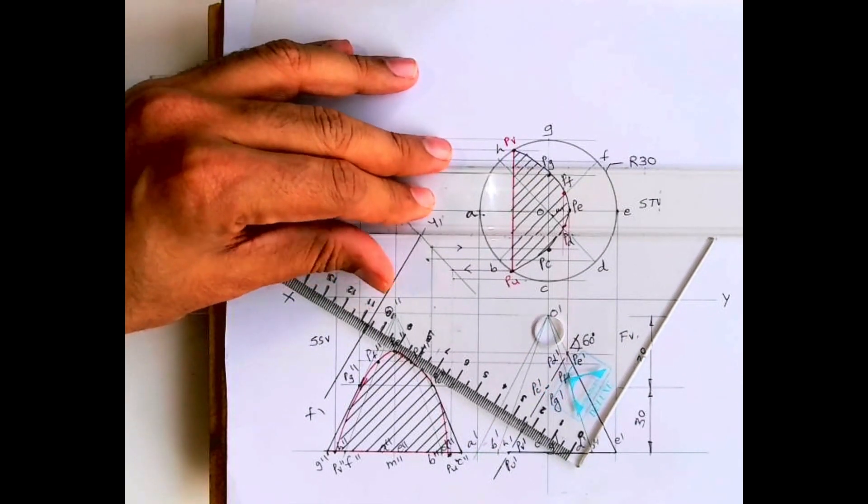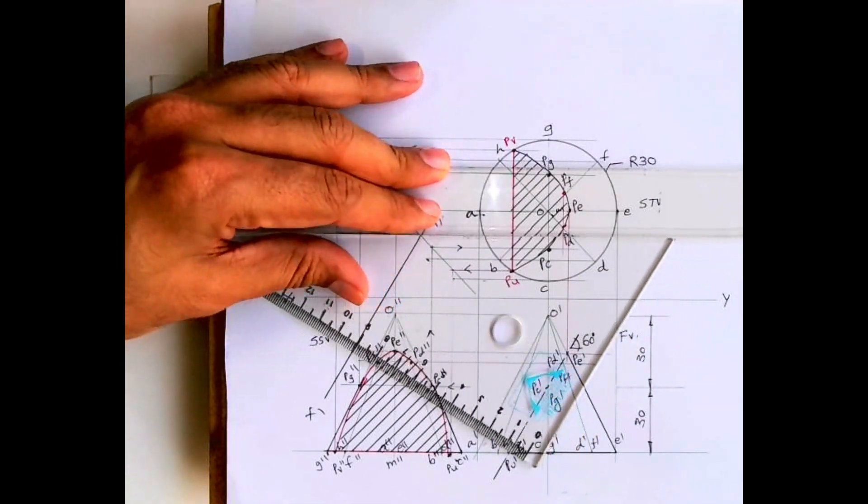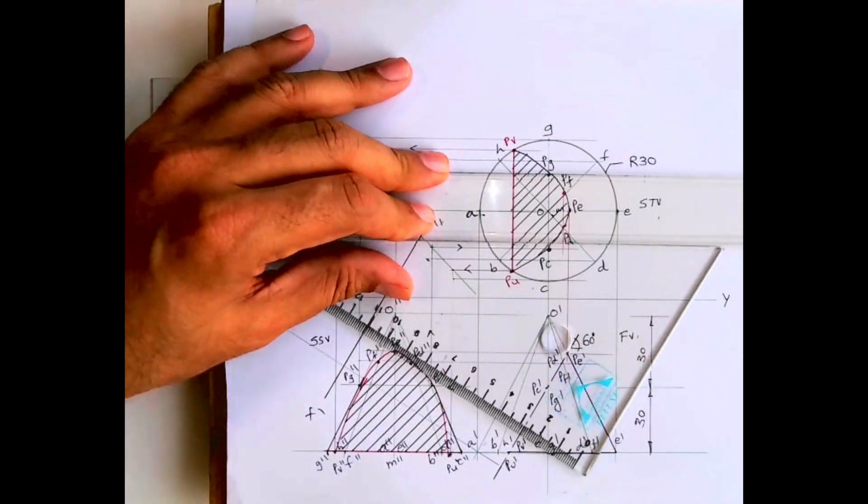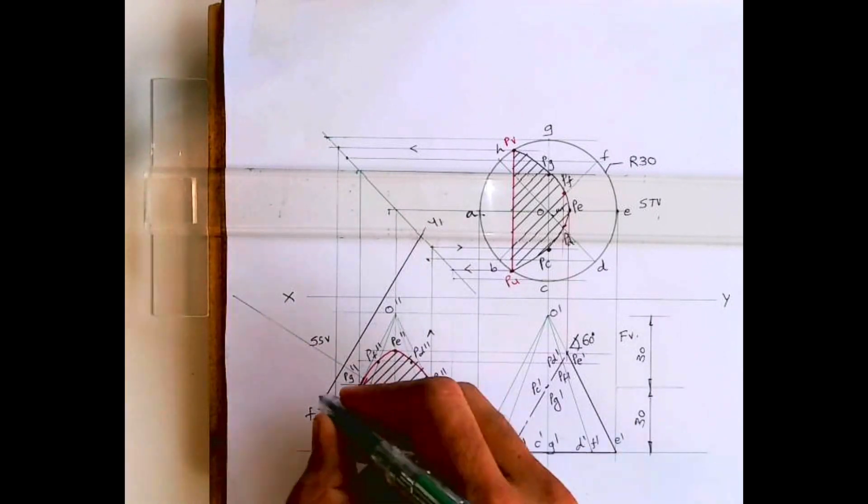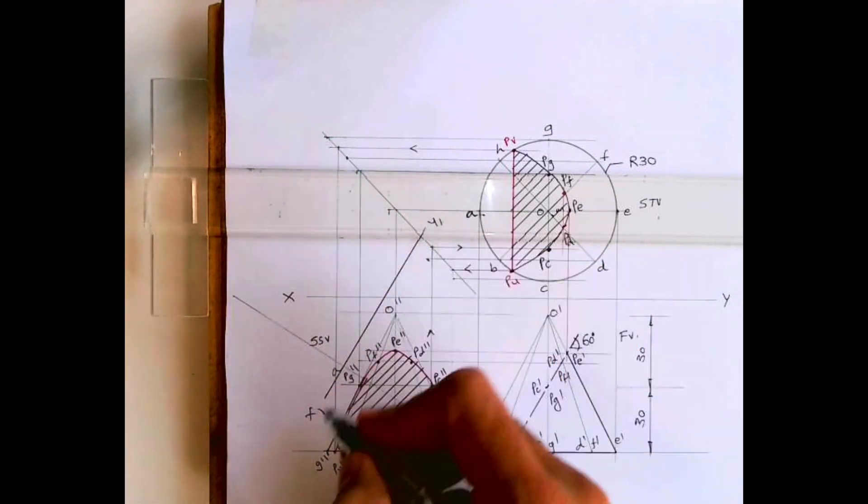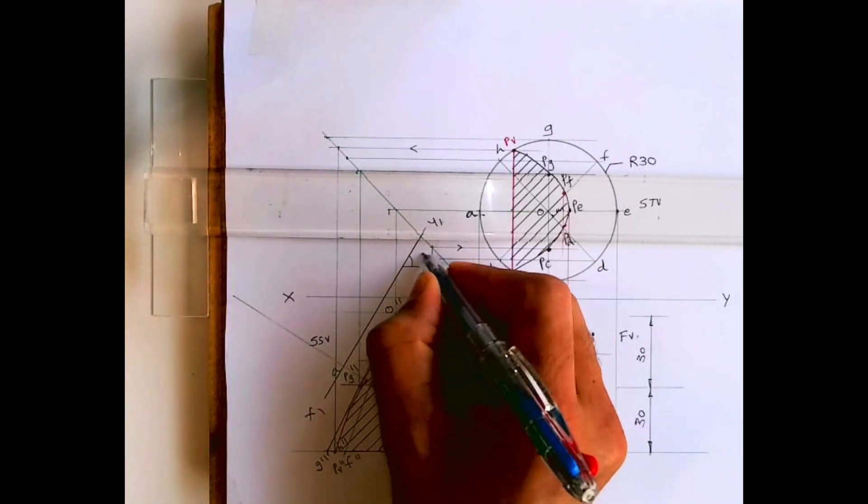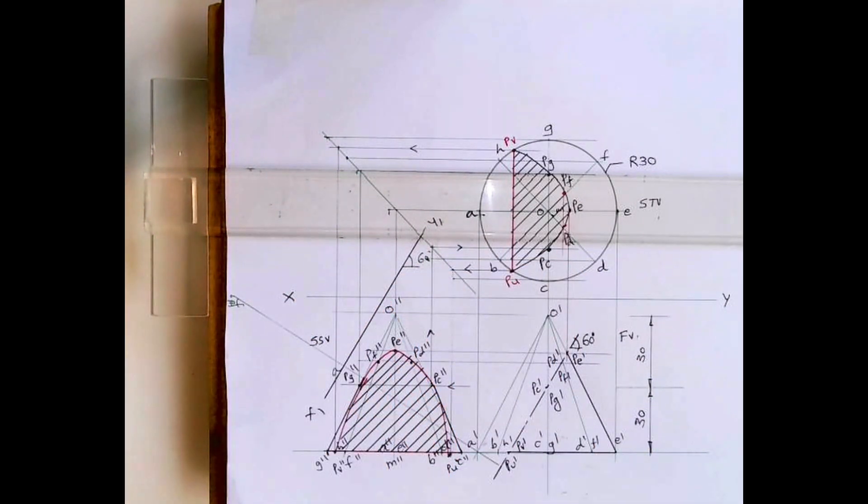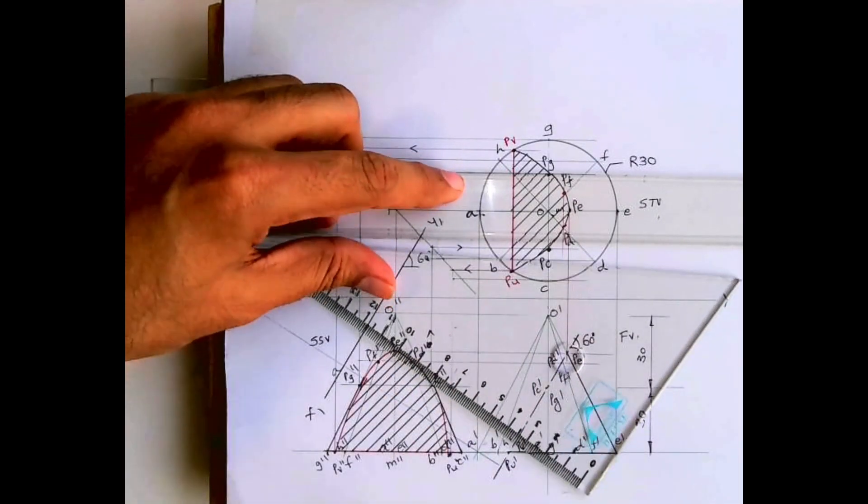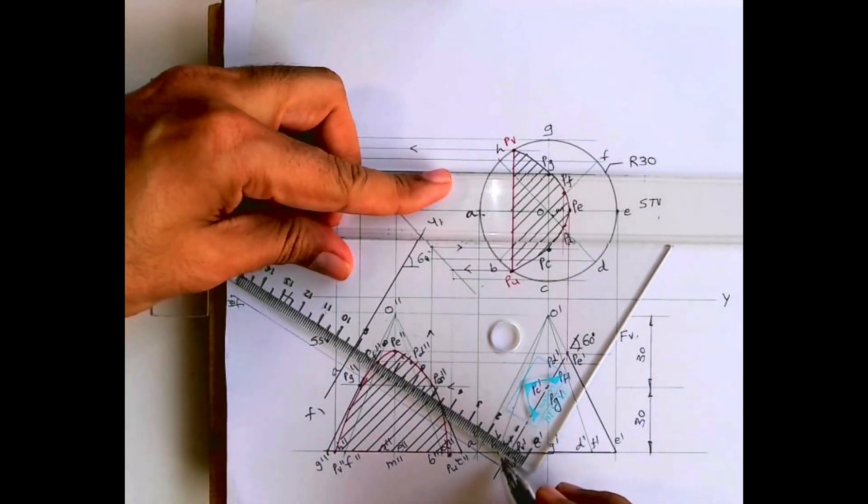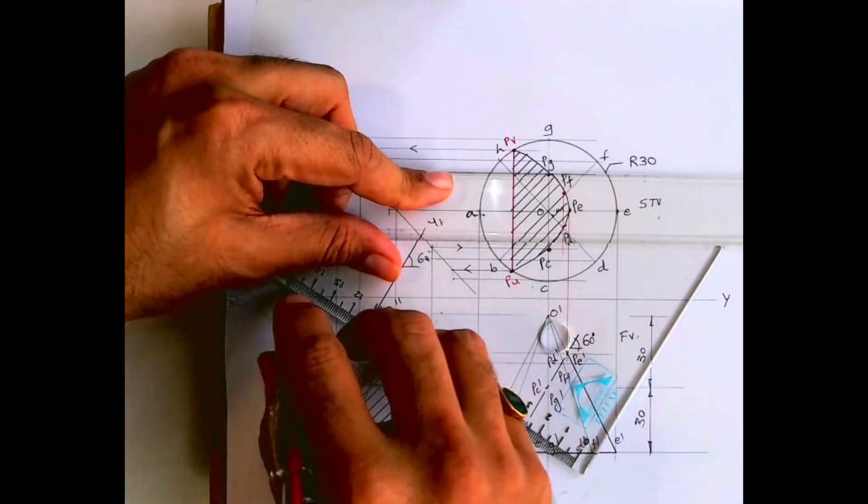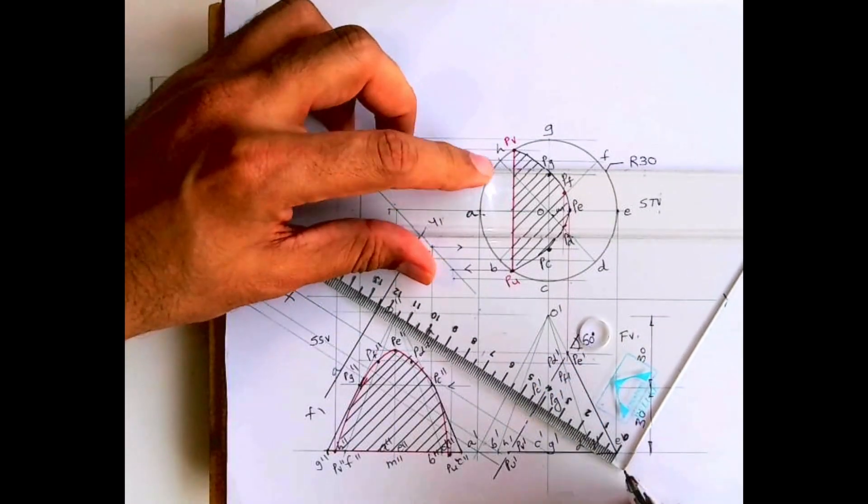We'll project points from all these points like a dash, b dash. From all this point we will draw lines inclined at 30 degrees. See, this x1y1 is inclined at 60 degrees. Why? Because the cut plane was inclined at 60 degrees, so all these lines which will go from a dash, b dash will be at 30 degrees. So it will always be 90 degrees. Always remember the addition would be always 90 degrees, or you can remember that it has to be perpendicular.